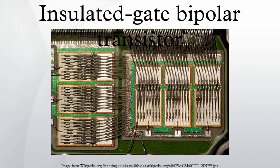In switching applications, modern devices boast pulse repetition rates well into the ultrasonic range of frequencies, which are at least ten times the highest audio frequency handled by the device when used as an analog audio amplifier. The IGBT combines the simple gate drive characteristics of MOSFETs with the high current and low saturation voltage capability of bipolar transistors. The IGBT combines an isolated gate FET for the control input and a bipolar power transistor as a switch in a single device. The IGBT is used in medium to high power applications like switched mode power supplies, traction motor control, and induction heating.